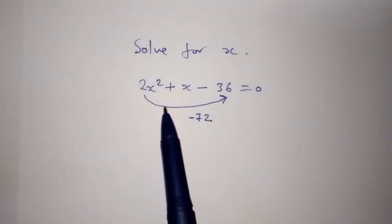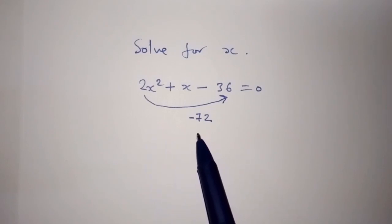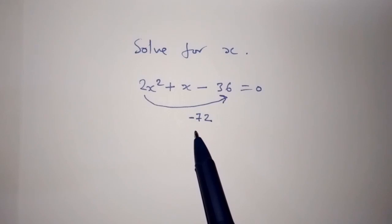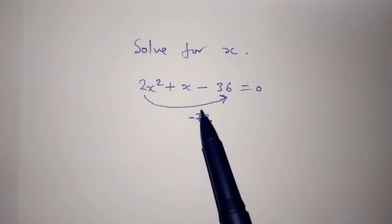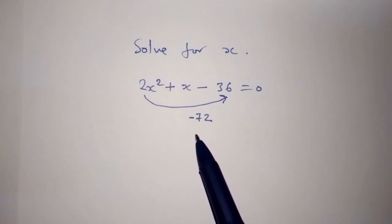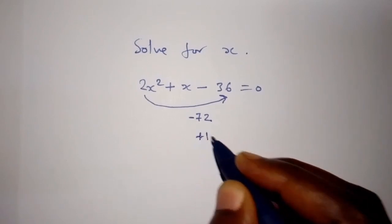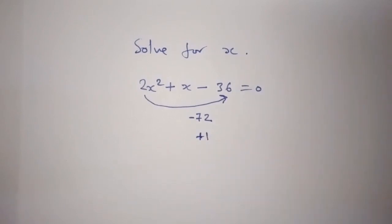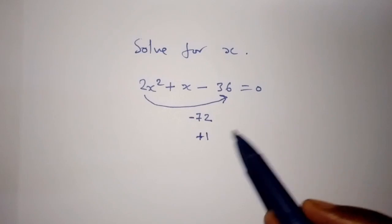From here, we are going to find two numbers which, when we multiply them, we end up with negative 72, and when we add the two numbers, we end up with positive 1. So which are these two numbers — the factors of 72?